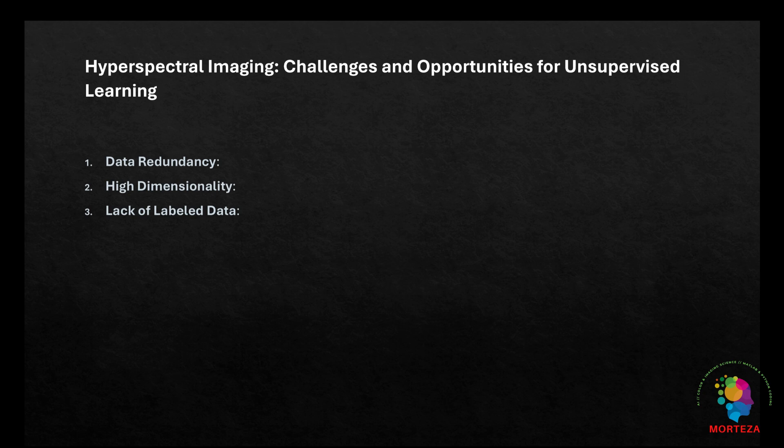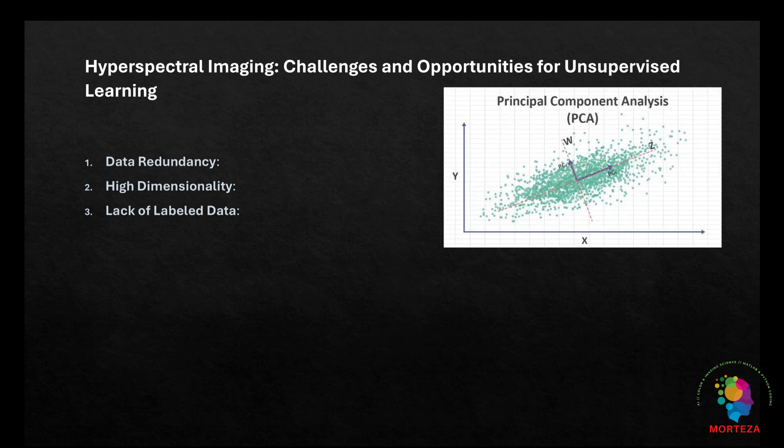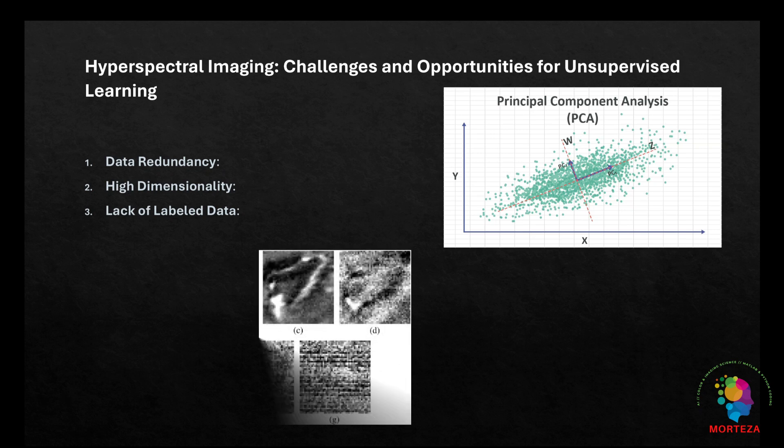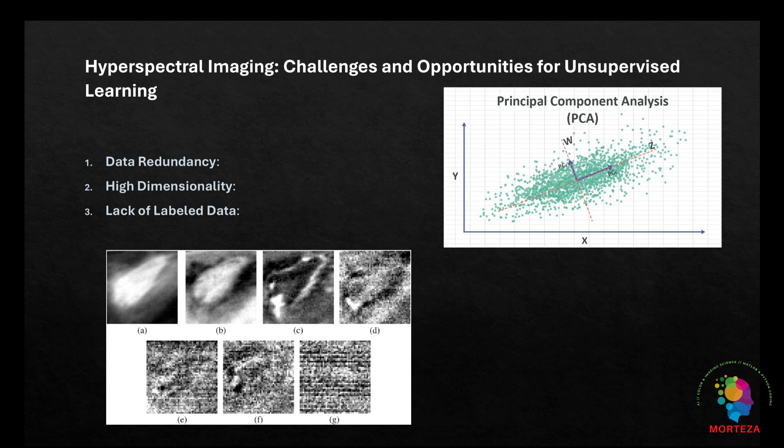To address the challenge of high dimensionality in hyperspectral imaging, dimensionality reduction techniques such as principal component analysis and minimum noise fraction transformations are used. Principal component analysis or PCA transforms the data into a set of orthogonal components or principal components that capture the most variance in the data. By reducing the data to a few principal components, the dimensionality is lowered and redundant information is minimized. Minimum noise fraction or MNF is similar to PCA but also considers noise in the data. It separates the signal from the noise providing a more robust dimensionality reduction for noisy data sets like hyperspectral images. This enables clustering algorithms like k-means and Gaussian mixture models to work more efficiently as they can operate on a smaller subset of important features.